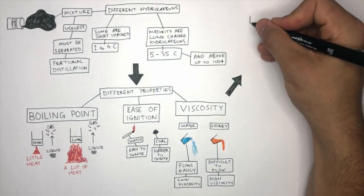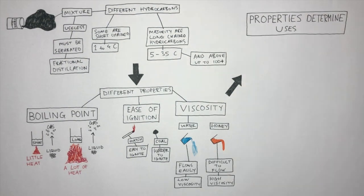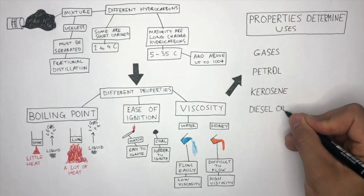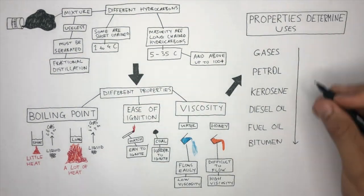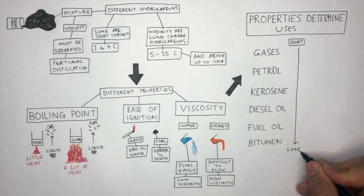The different properties of these hydrocarbons determine their uses. These are the different fractions obtained from the fractional distillation of crude oil. Short-chain hydrocarbons are at the top and long-chain hydrocarbons are at the bottom.